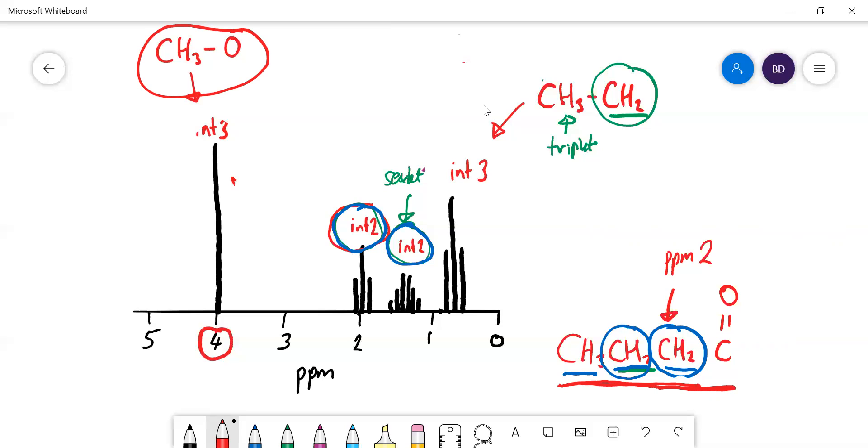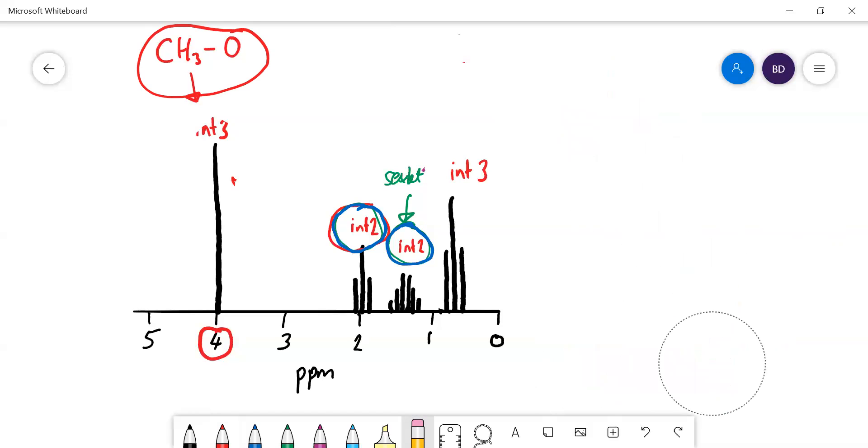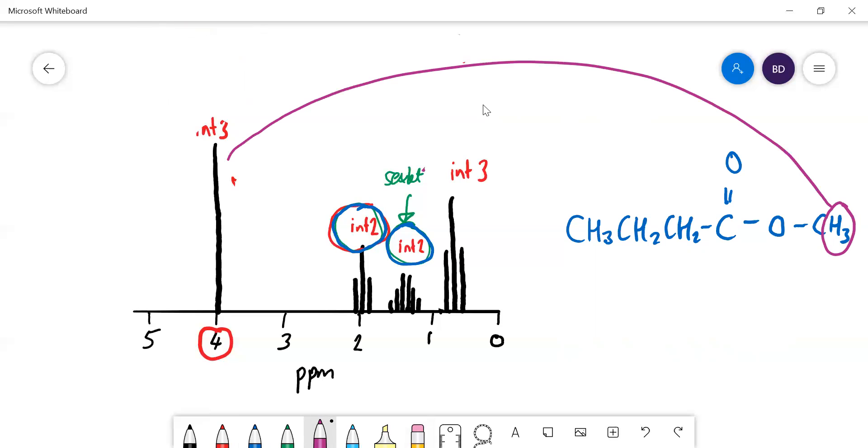Sorry if there's a bit of noise in the background, the bin men are just outside collecting the bins. So let's draw the whole thing out, what we've got. Let's go through what's what then. This CH3 is that peak there. High ppm because it's next to the oxygen. Singlet because there's no carbon with hydrogens on it there.